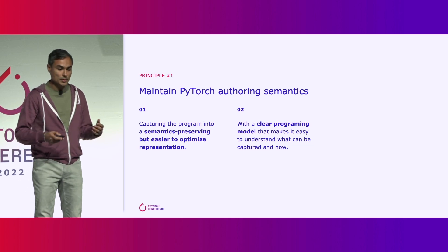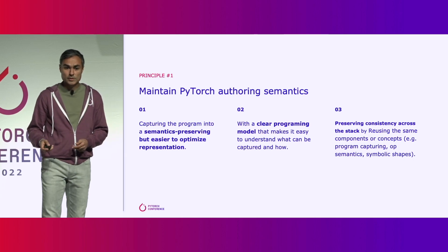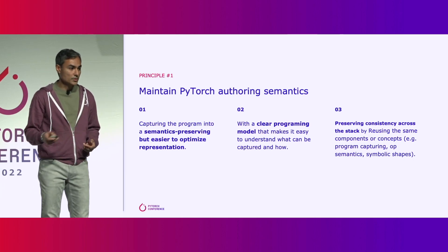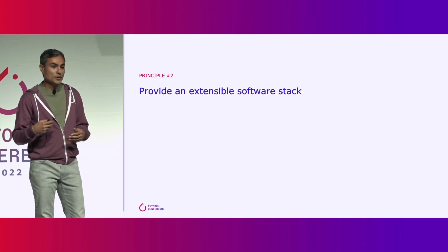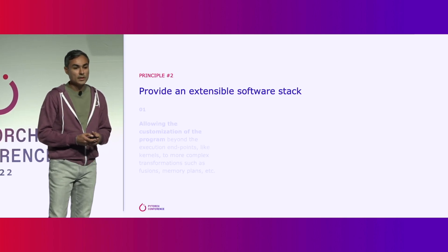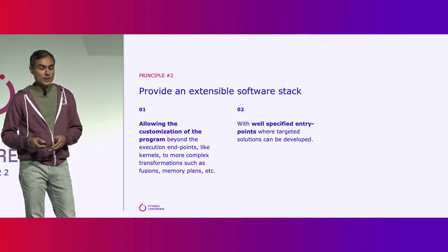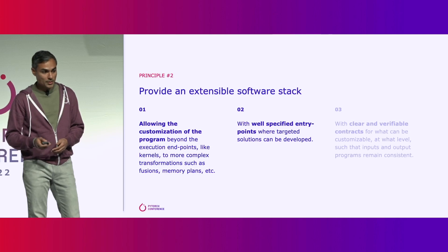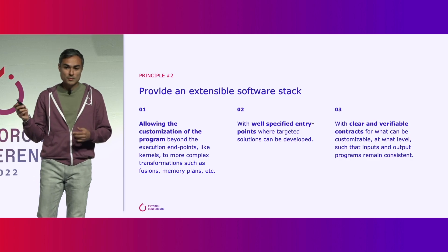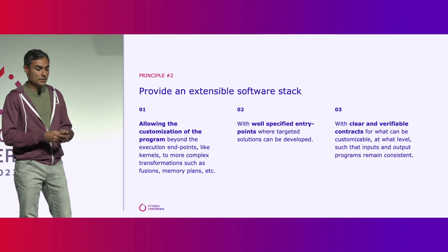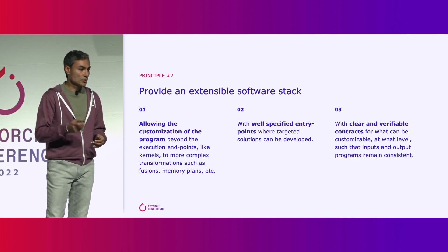You saw a previous talk about export — this is the other key thing. We want to preserve consistency across all the PyTorch stack by reusing all the components you heard about today. The second principle is we want to embrace user extensibility, allowing users to customize a program via well-defined entry points. These entry points need to have a clear and verifiable contract, ensuring the semantics of the program are maintained even as optimizations happen through the stack to target a particular device.